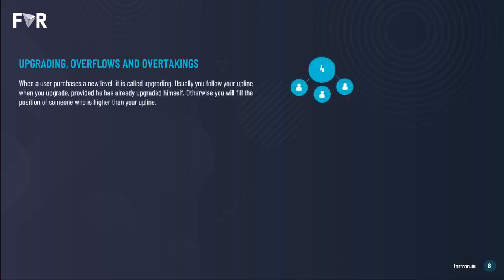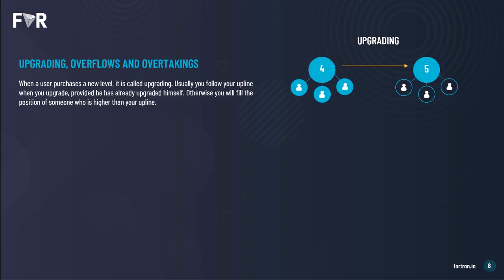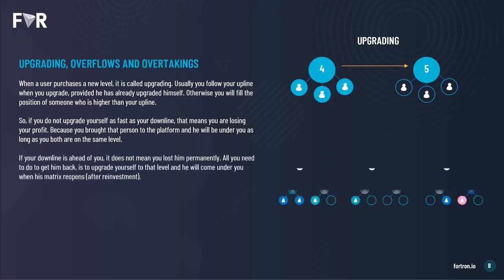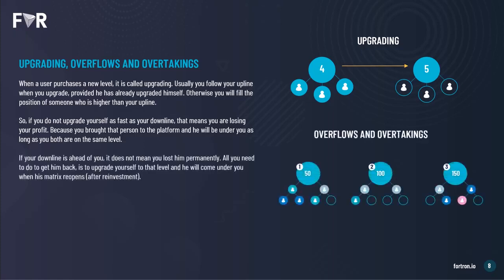Some other key concepts are upgrading, overflows, and overtaking. When a user purchases a new level, it's called upgrading. Usually you'll follow your upline when you upgrade, provided they have already upgraded themselves; otherwise, you'll fill the position of someone higher than that original upline. If you don't upgrade yourself as fast as your downlines, you're going to lose out on profits, because you brought that person to the platform and they will be under you only so long as you are both on the same level.